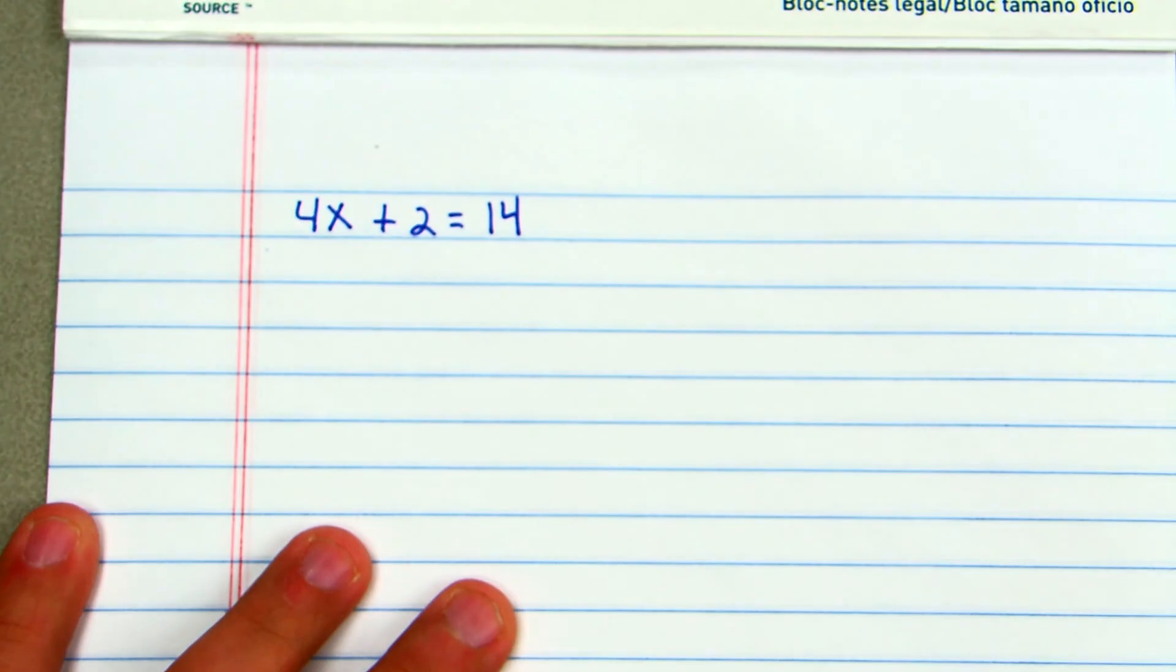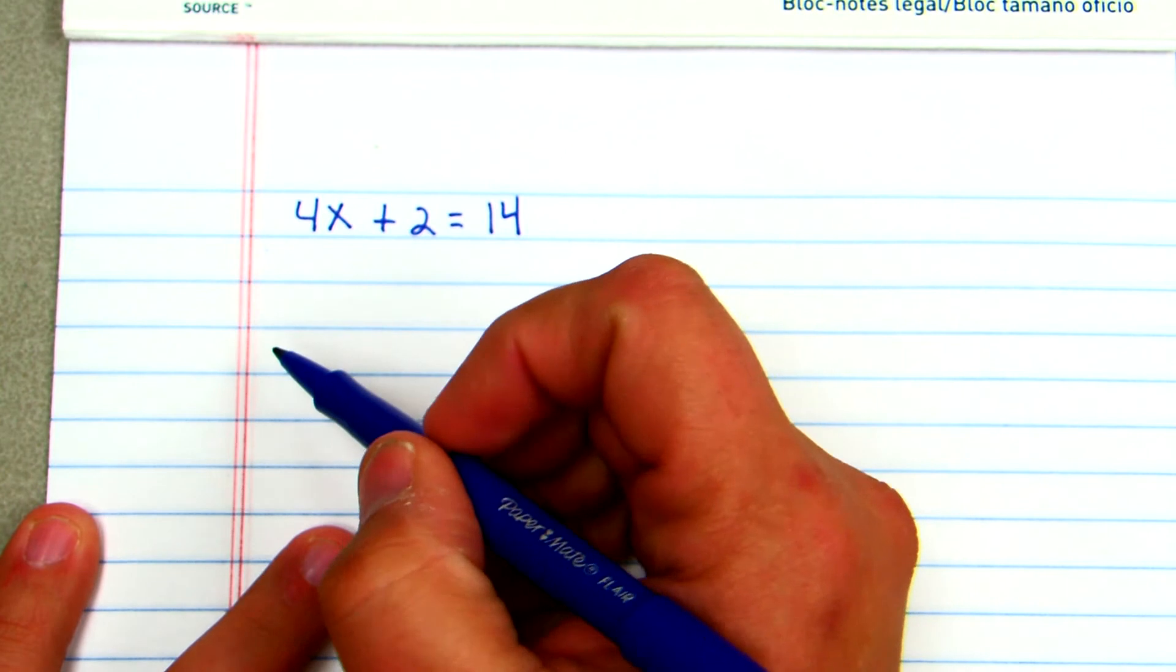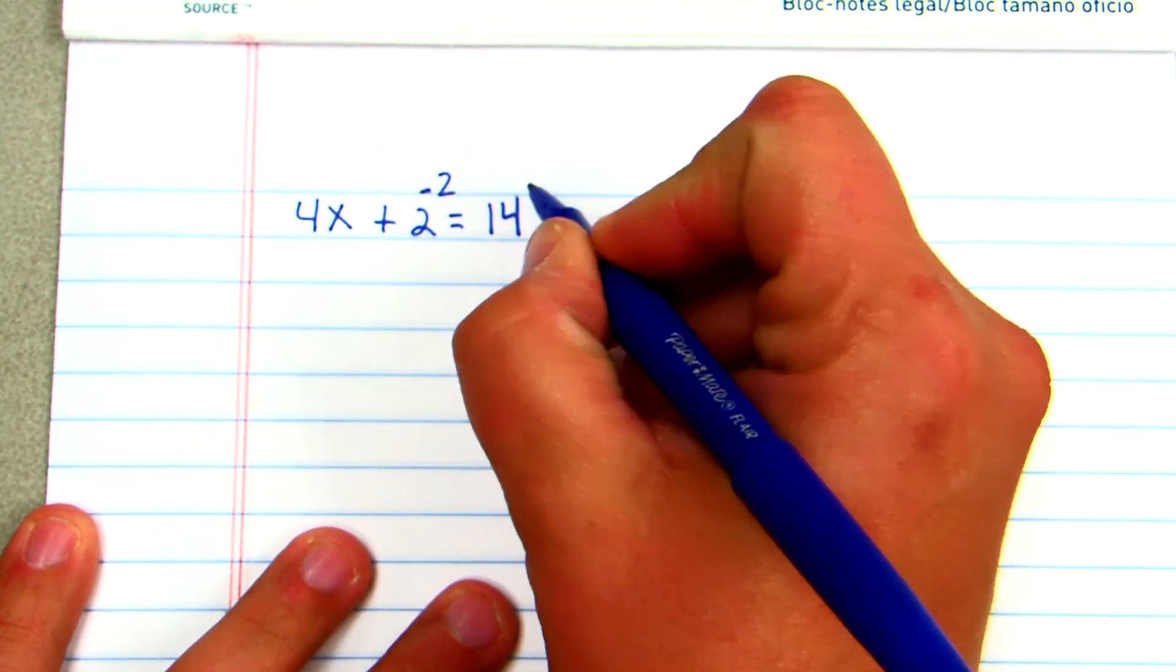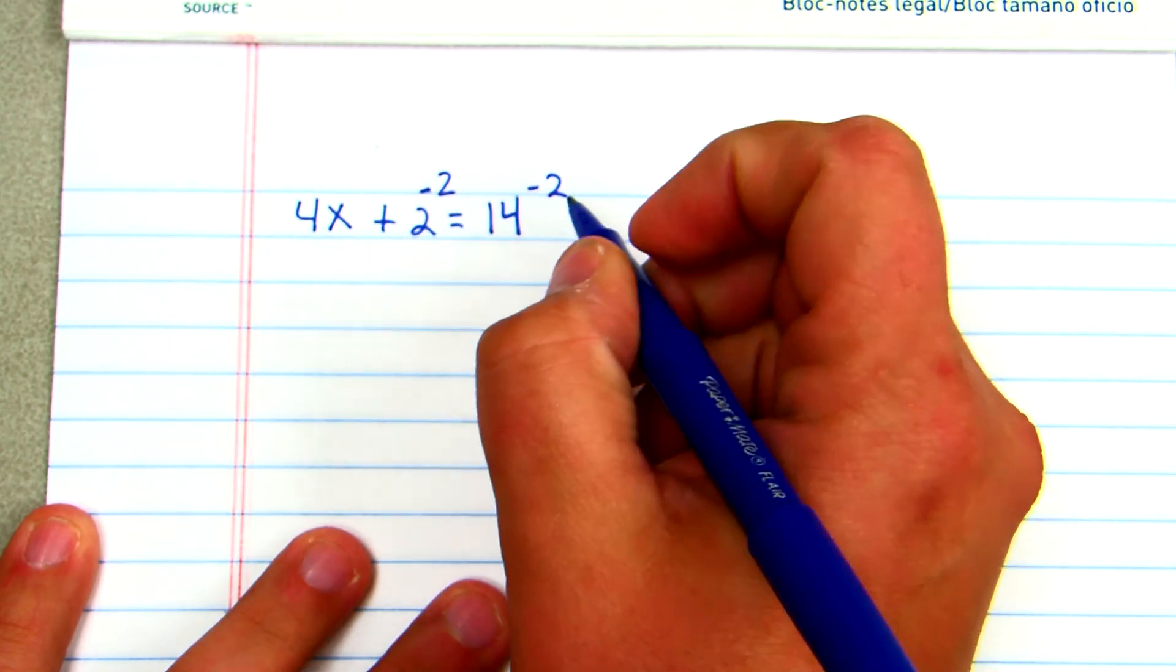Okay, so my first thing that I want to do is make sure my variable is already isolated. It is. x is on the left side. So the first step that I want to do is subtract 2 from both sides. When I subtract 2 from both sides, it's going to carry that 2 over.